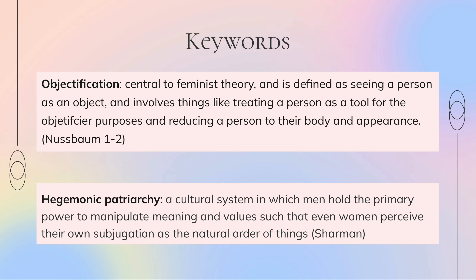Two key words that are important in my research are objectification and hegemonic patriarchy. The objectification of women basically means that women are being seen as objects. I'll be exploring two specific components: how female characters are often reduced to their body and appearance, and how they're often reduced to being used as a tool for the male protagonist's character development. This connects to the broader societal issue that we live in a hegemonic patriarchy.